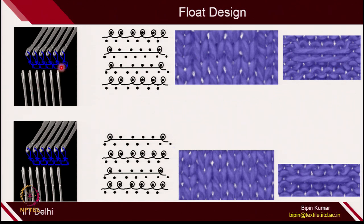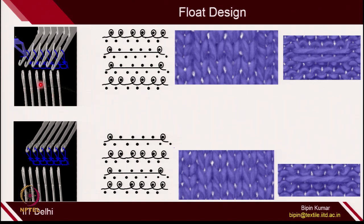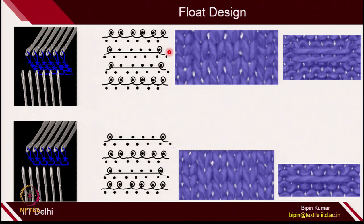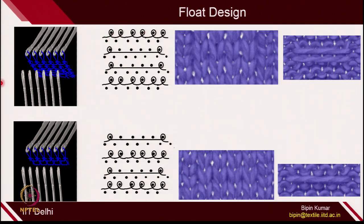Let's see the animation. The first needle and the sixth needle are making loops and 4 needles in between are making float simultaneously. First course, all are knitting. Second course, only 2 are knitting and 4 are resting. In the third course, again 2 are knitting and 4 are resting. In the fourth course, all are knitting. This is how you create this fabric structure and the appearance will look like this.